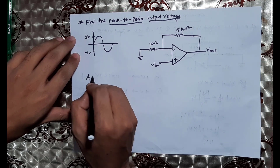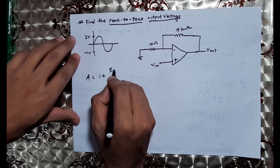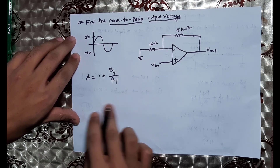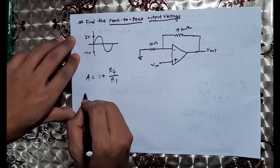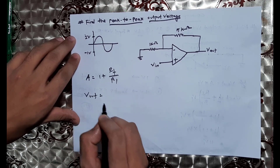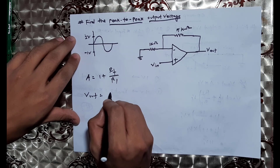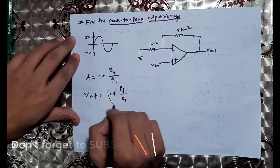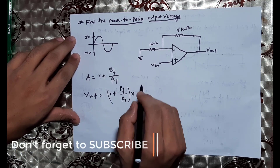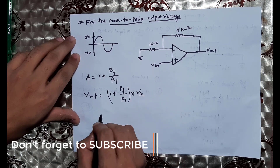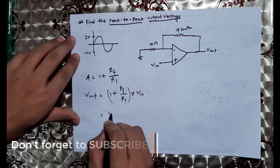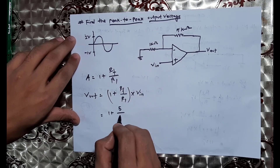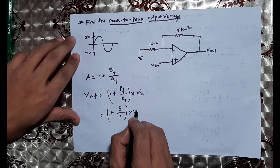The output voltage is equal to gain into input voltage: 1 plus Rf divided by R1, into Vin. If we get the gain where Rf is 5 and R1 is 1, into Vin.